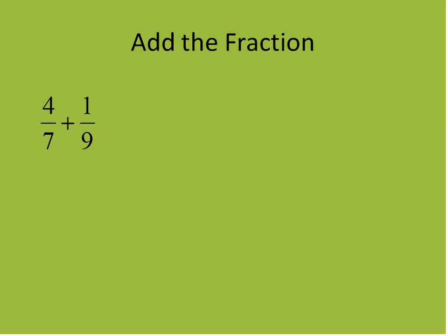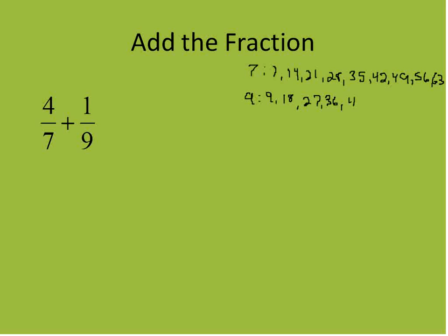Let's add another set of fractions. We'll list the multiples of 7: 7, 14, 21, 28, 35, 42, 49, 56, 63. Now the multiples of 9: 9, 18, 27, 36, 45, 54, 63. I stopped at 63 because 7 times 9 gives us the largest possible least common denominator. In this case, 63 is the least common denominator.